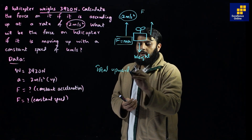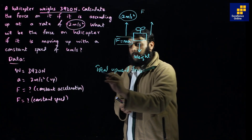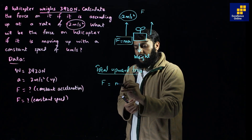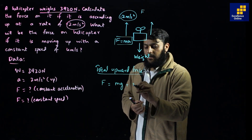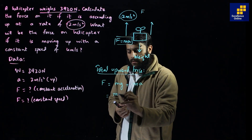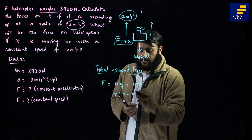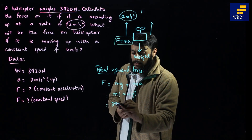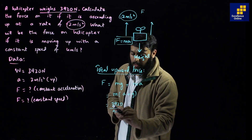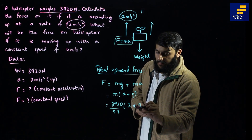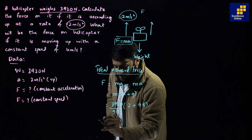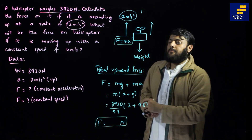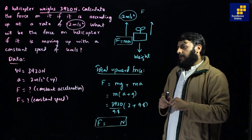The total upward force equals mg plus ma, which gives us m(g + a). Here m can be calculated as 3920 divided by 9.8, then multiplied by (2 + 9.8). Solving this gives the upward force when the helicopter is accelerating.